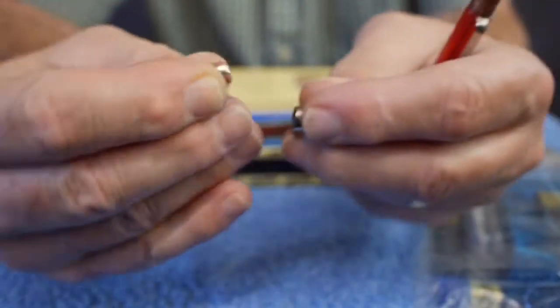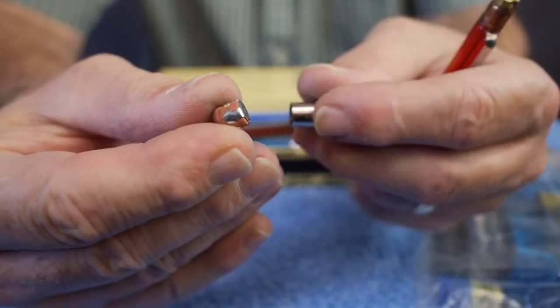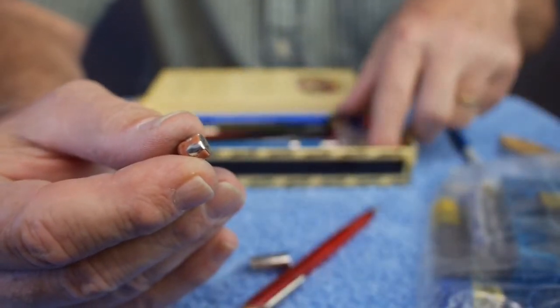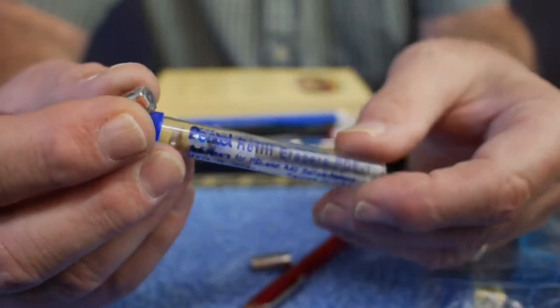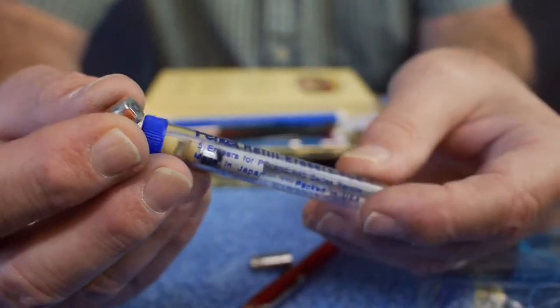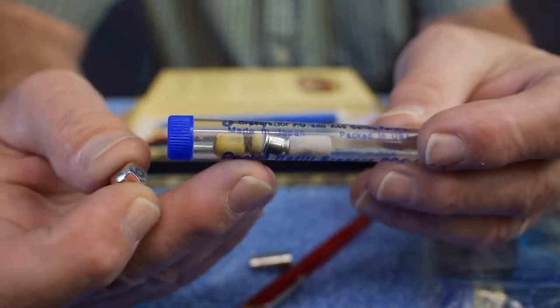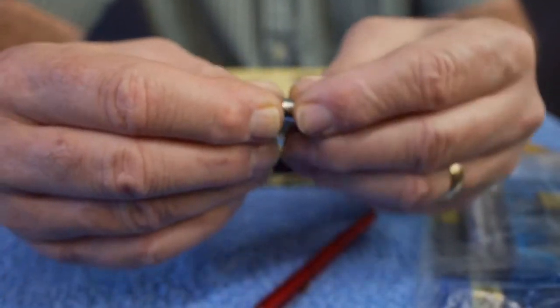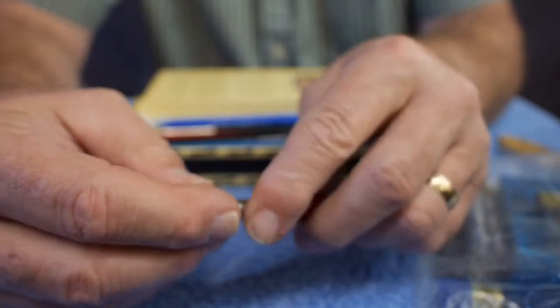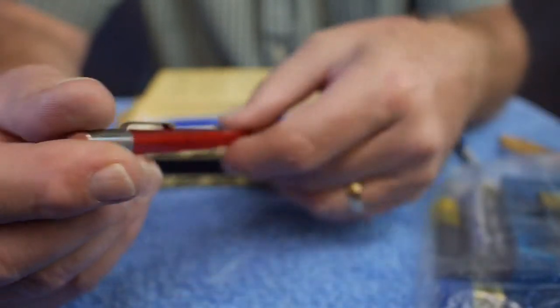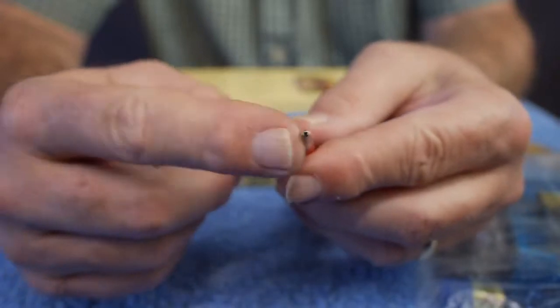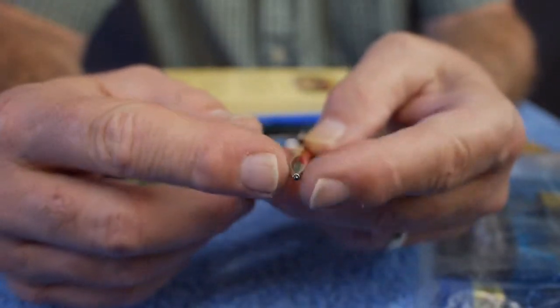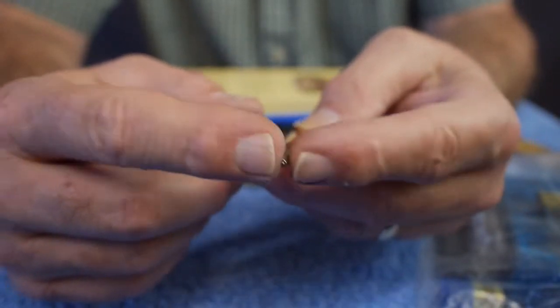The erasers have a metal ferrule cap on the end of it that holds the eraser in here. I think these Pentel refillables might work to refill these. But these date back to my childhood in the 1960s. I have not tried to see if there's any replacement leads for them. I suspect there might be.